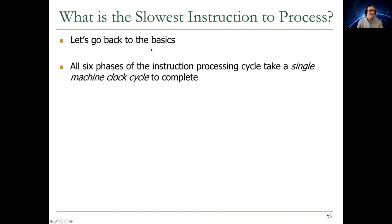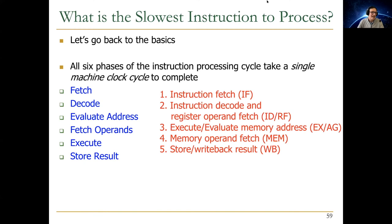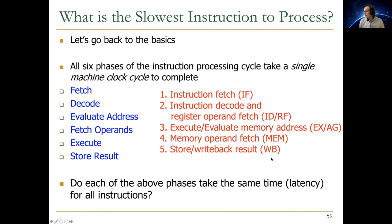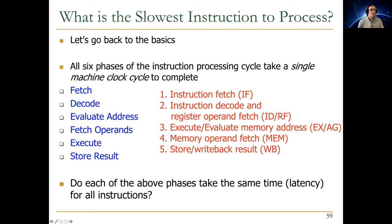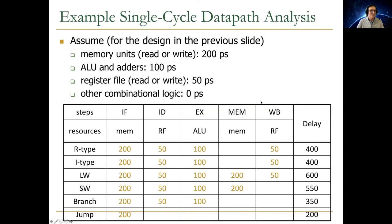All six phases of the instruction processing cycle must complete in one clock cycle. Different instructions use different subsets of the stages: instruction fetch, decode/register read, execute/evaluate address, memory access, and write-back. Every instruction requires a fetch (200 ps). Most require an ALU (100 ps). Only loads and stores require memory access (200 ps). Only R-type, I-type, and load word require register file write (50 ps).